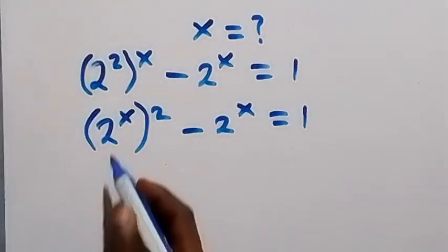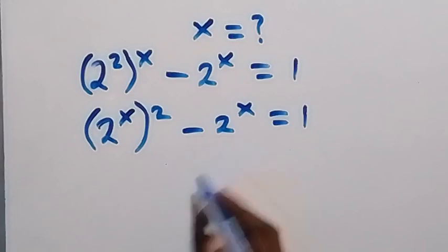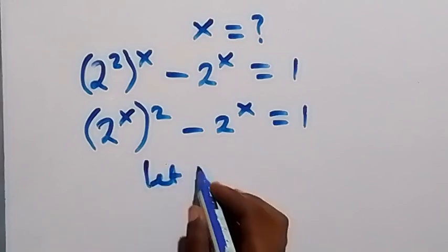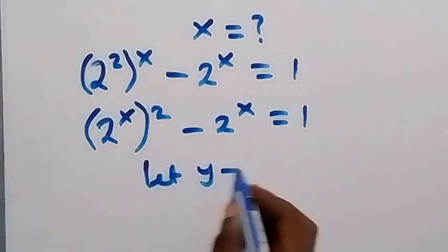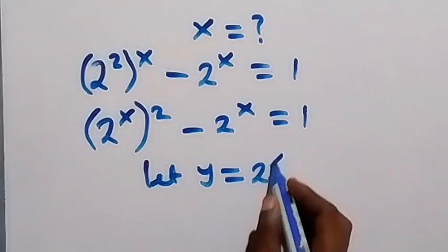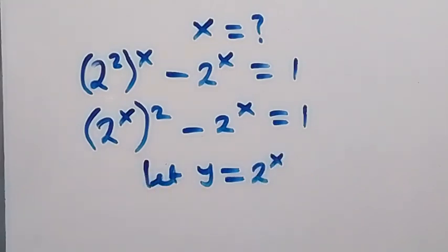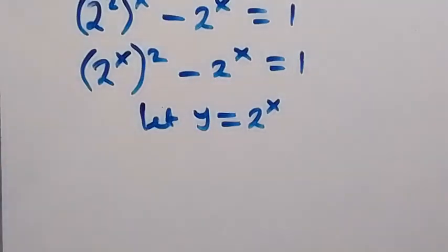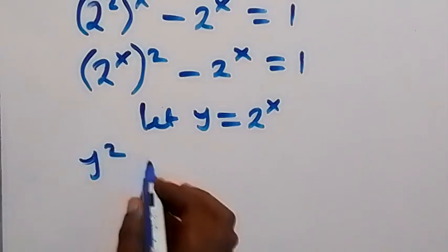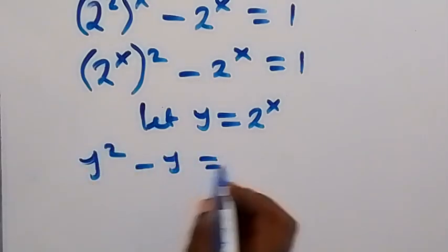Then we have 2 raised to power x common here, so let's use the letter y. Let y be equal to 2 raised to power x. Then this equation can be written in terms of y, and we have y squared minus y equals to 1.